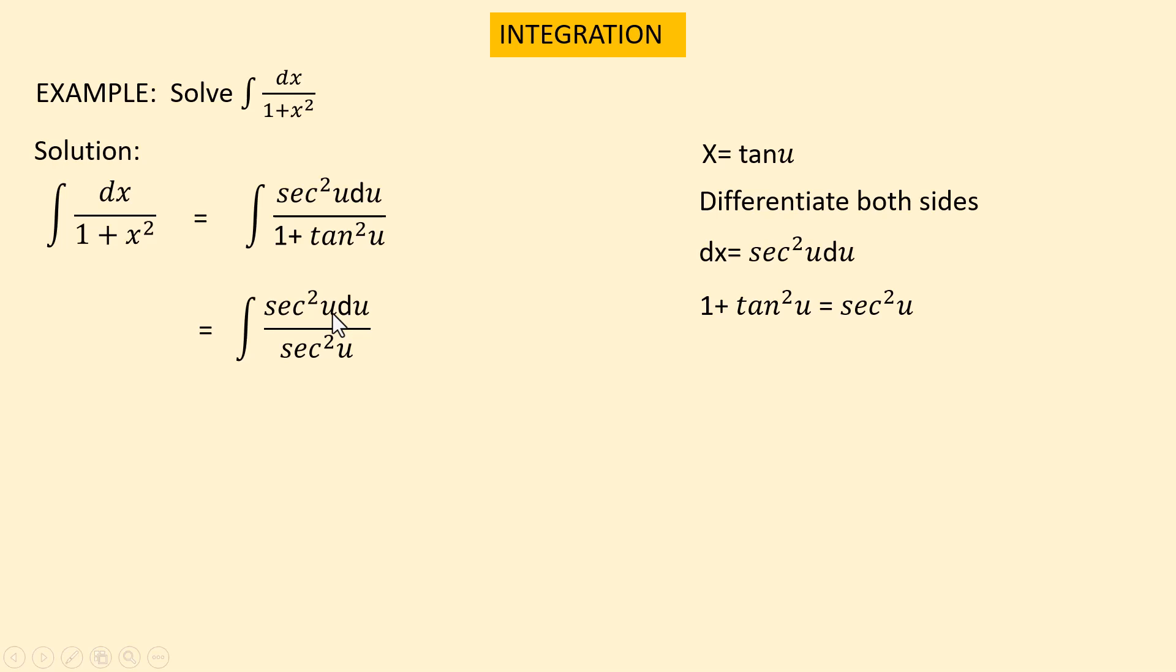We get integration of sec squared u du over sec squared u. This sec squared cancels this one. We get integration of du.